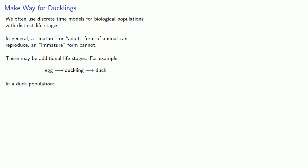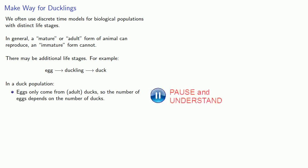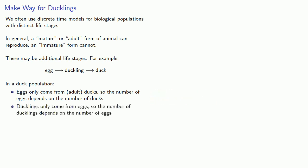In a duck population, eggs only come from adult ducks, so the number of eggs depends on the number of ducks. Meanwhile, ducklings only come from eggs, so the number of ducklings depends on the number of eggs. And finally, adult ducks come from ducklings that mature, as well as adult ducks that survive.